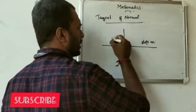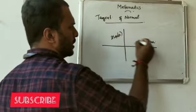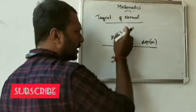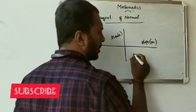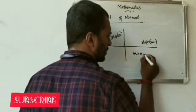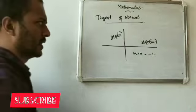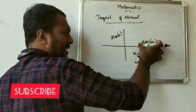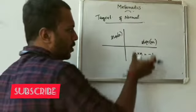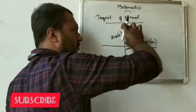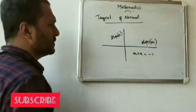We are going to see the slope. The slope is a key angle. The product M into N equals minus 1. Slope of the first line into slope of the second line is equal to minus 1. This is the perpendicularity condition.